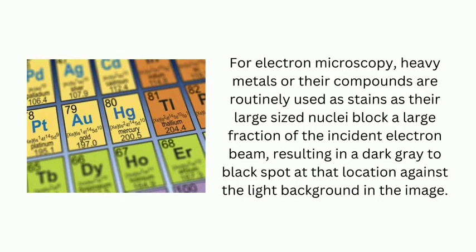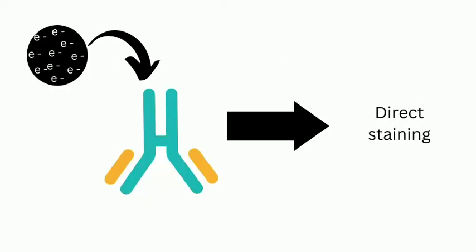Immunoelectron microscopy involves coupling of an electron dense substance such as osmium tetroxide, ferritin, and colloidal gold to the Fc portion of the probing antibody for direct staining.